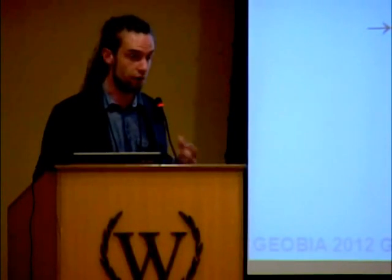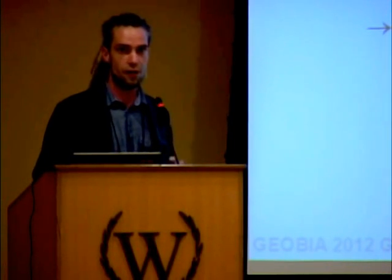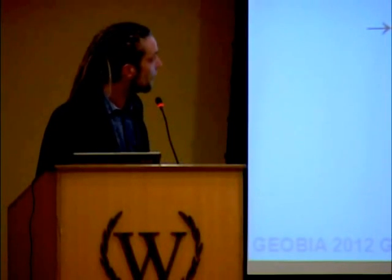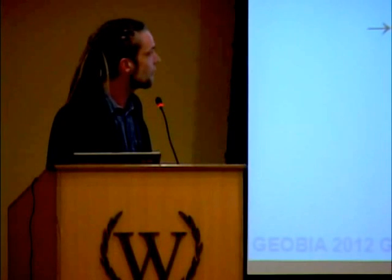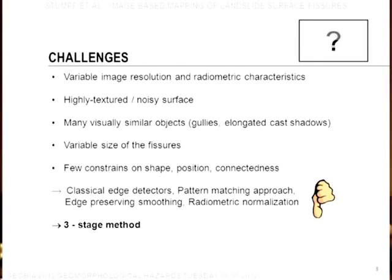The fissures, basically, they can occur everywhere and they are very variable in size. So there are a little few constraints that we can put on the size and the shape of those features. We tried at the beginning some classical approaches, like edge detectors, Sobel and Canny, or pattern matching approach. We tried to normalize or smooth the images also somehow. And that did all not work so well.